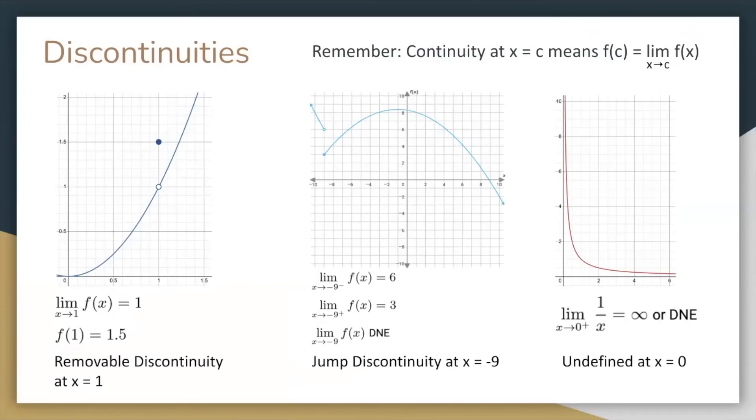Now into discontinuities. Remember that continuity at x equals c means that f of c equals the limit as x approaches c of f of x. There are a few types of discontinuities. The first piecewise function you saw earlier has a removable discontinuity at x equals 1. The second piecewise function you saw has a jump discontinuity at x equals negative 9 because the limit from the left doesn't equal the limit from the right. And finally, if a function is undefined at any input, it's not continuous at those inputs.